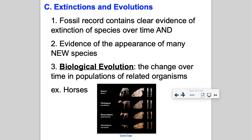Extinctions and evolution — extinctions are sad, but without extinctions, new species couldn't rise. After dinosaurs were wiped out, it gave mammals a chance to evolve. If dinosaurs weren't wiped out, humans wouldn't be where we are at in our evolutionary time scale.